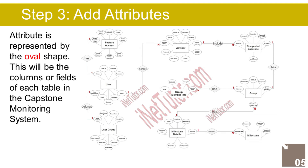The Advisor entity has the following attributes: Advisor ID (primary key, represented with underline), Full Name, Credential, Email Address, Contact Number, Avatar, Username, Password, Account Status, and User ID (foreign key). The Group Member Info entity has the following attributes: Member ID (primary key, represented with underline), Group Code, Member Name, and Role.